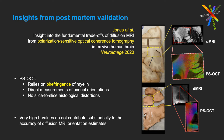Recently, we assessed the accuracy of diffusion orientation estimates ex vivo using polarization-sensitive optical coherence tomography, or PSOCT — a modality that relies on the birefringence of myelin to obtain direct measurements of axonal orientations at microscopic resolutions without the nonlinear slice-to-slice distortions that are typical of histological methods. You can read all about it in the recent paper by Robert Jones in NeuroImage. One of our findings is that very high B values do not contribute substantially to the accuracy of diffusion orientation estimates, suggesting that perhaps current ODF-based methods may not be taking full advantage of the information content in those high B values.